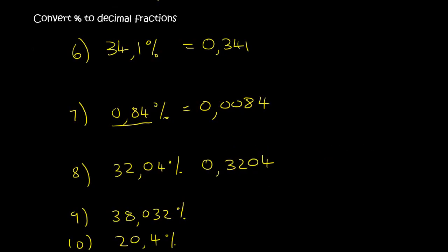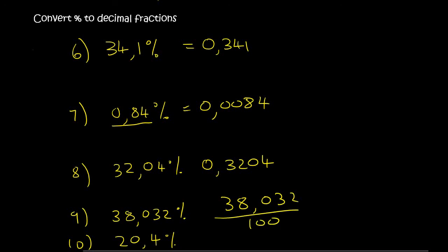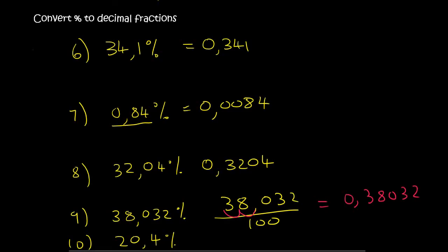38.032%: step one, write it over 100. You then move your decimal place twice: 1, 2. And so you end up with comma 38032. Because it's empty in the front, just add a 0.